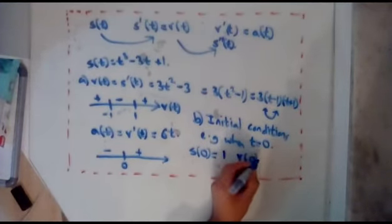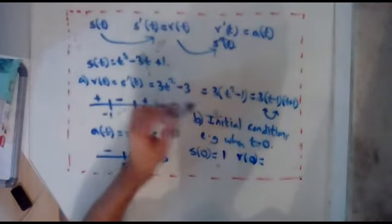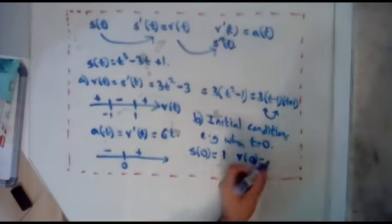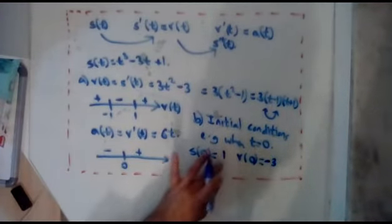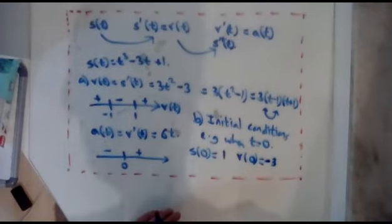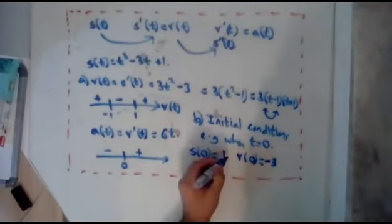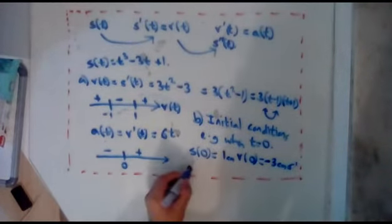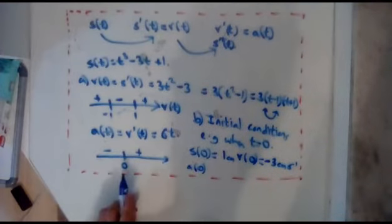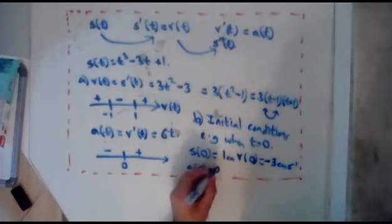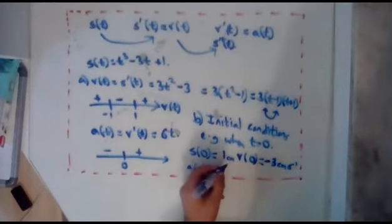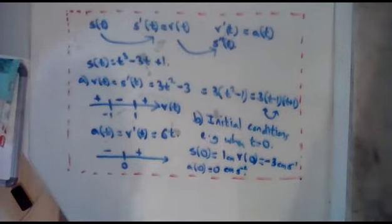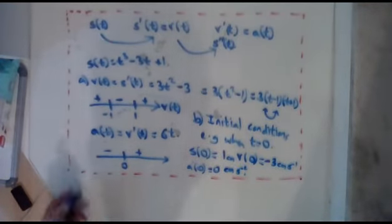V of 0 equals. So that actually can go in here. I'll probably go in here. So 3 times 0 squared is 0 minus 3. Minus 3. I should probably put some units in. It is in centimeters, isn't it? Centimeters and it's seconds. So cm and this will be cm per second. And a(0) is going to be just 0. So 0. And that sort of doesn't really have units if it's 0. If it did have units, it would be centimeters per second squared. If you do physics, you'll probably be a lot better at that.